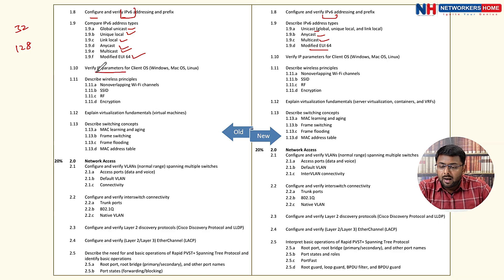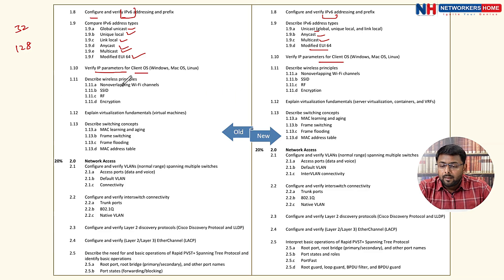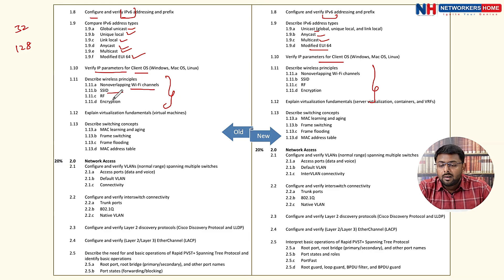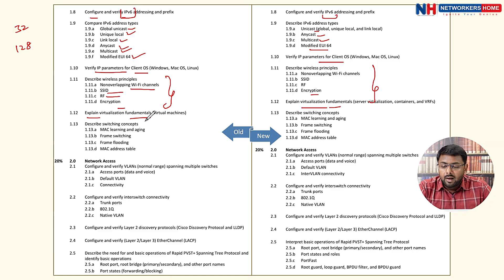We verify IP parameters for client operating systems. Then we discuss wireless principles including non-overlapping Wi-Fi channels, SSID (Service Set Identifier), roaming, and encryption. We also explain virtualization fundamentals, and then switching concepts such as MAC learning, frame switching, frame flooding, and MAC address tables.